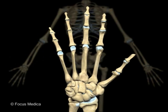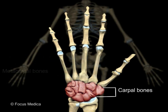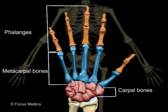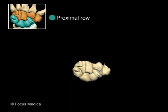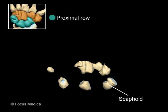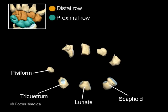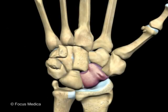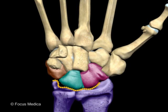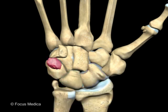The articulated hand consists of carpal bones, metacarpal bones, and the phalanges. It is connected to the upper limb at the wrist joint. The carpal bones consist of eight small bones arranged in two rows. The proximal row consists of scaphoid, lunate, triquetrum, and pisiform, while the distal row consists of trapezium, trapezoid, capitate, and hamate. The scaphoid, lunate, and triquetrum articulate with the forearm at the wrist joint. The pisiform is a sesamoid bone.